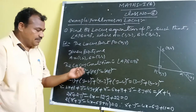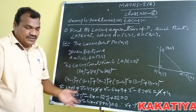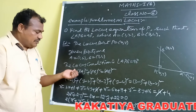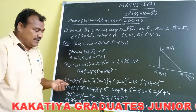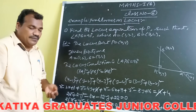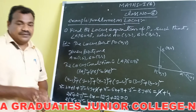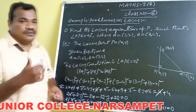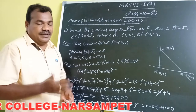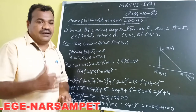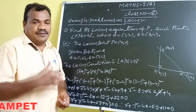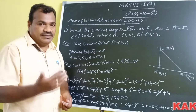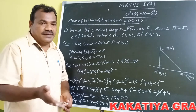PA² plus PB² is equal to AB². Simplifying this: PA² is the square of the distance between P and A; PB² is the square of the distance between P and B; and AB² is the square of the distance between A and B. All these expressions involve x and y, yielding the locus equation of P.